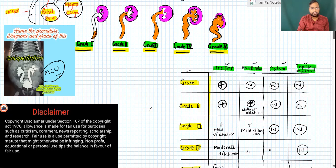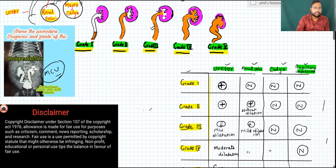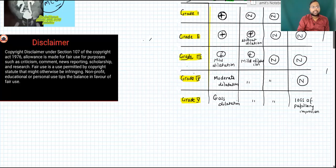In Grade 3, the reflux again reaches the pelvis, but now there is dilatation of the ureter and mild dilatation of the renal pelvis. However, the calyxes and papillary impression remain normal.